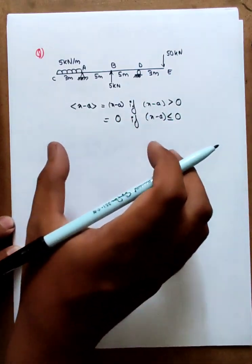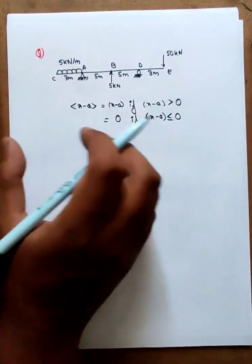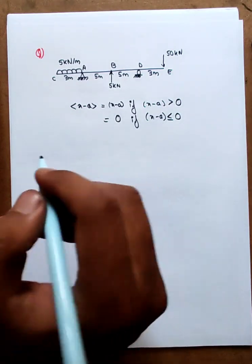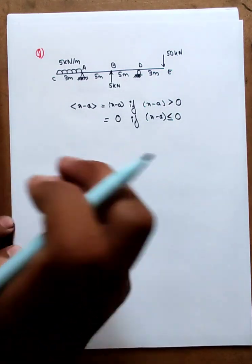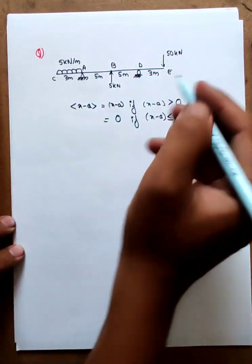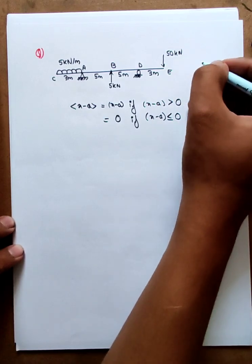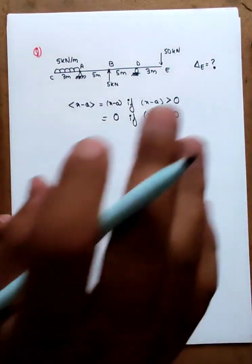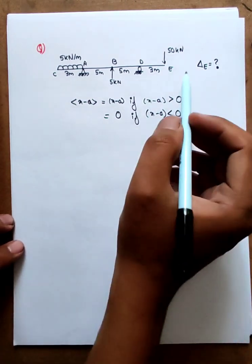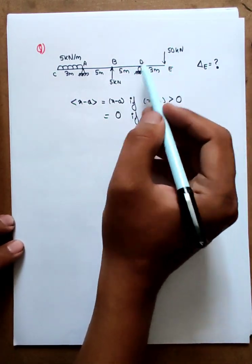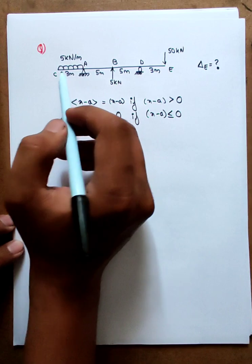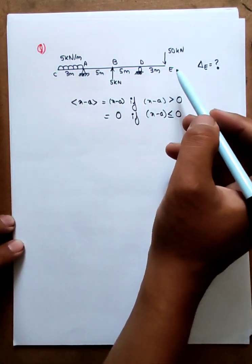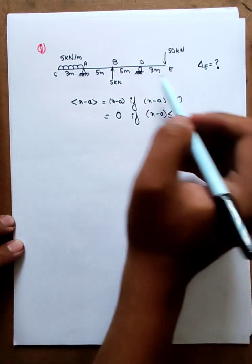This method is going to solve the moment. We already know that the deflection at e is greater than 0. This is the overhanging element. What is the deflection at e?